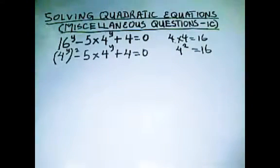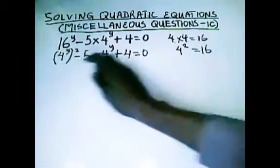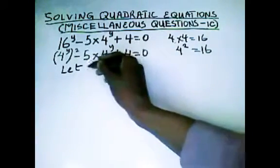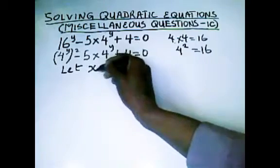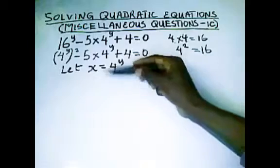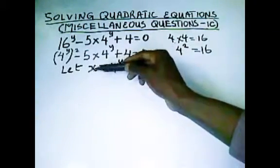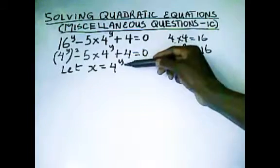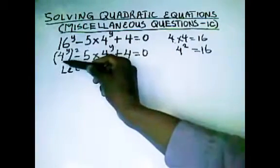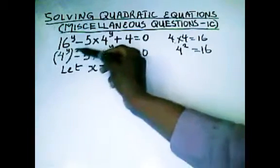So, at this point, what do we do? We are going to take a substitution for 4^y. So, what that means is that we say, let x equals to 4^y. Now, we are taking this substitution so that we can be able to replace 4^y and then get the value of x. And from the value of x, we can get the value of y. So, if x equals to 4^y, it means that in this first term where we are having 4^y, we are writing x and it will become x^2.